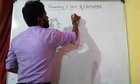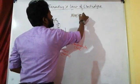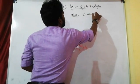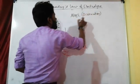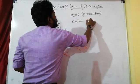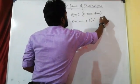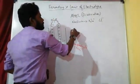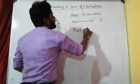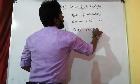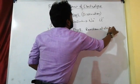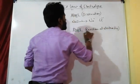The electrolysis process occurs in two steps. Step 1 is dissociation: when current passes through molten NaCl, it dissociates into Na⁺ and Cl⁻ ions. Step 2 is the reaction at the electrodes.